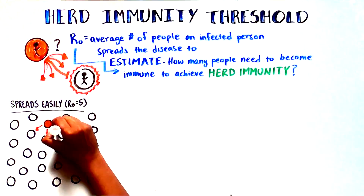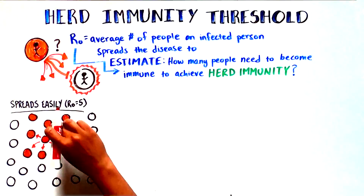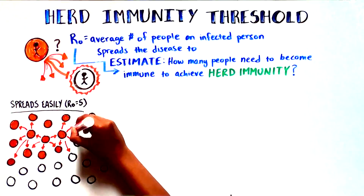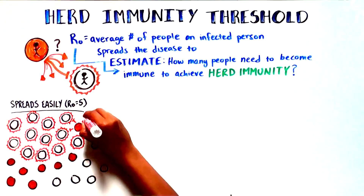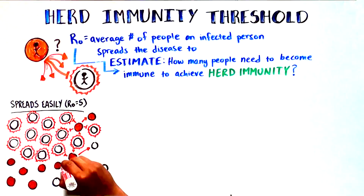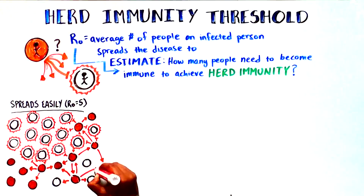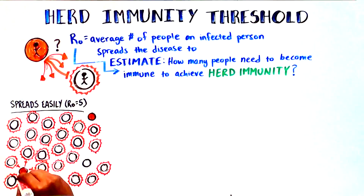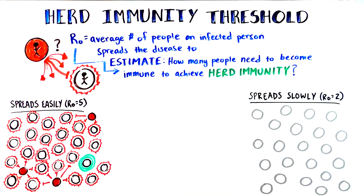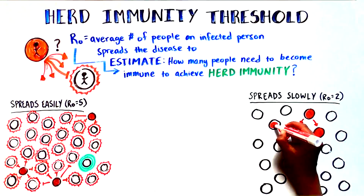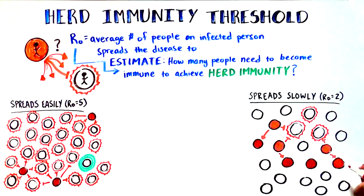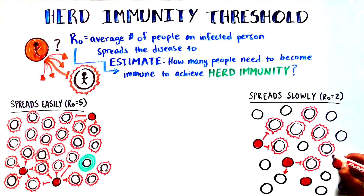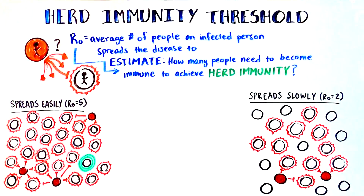Let's take a look at this visually. For a pathogen that spreads very easily or is highly communicable — say one with an R0 of 5 — many more individuals need to become immune to reach the herd immunity threshold. For a pathogen that spreads relatively more slowly, one with an R0 of 2 for example, fewer people need to develop immunity before herd immunity becomes protective.